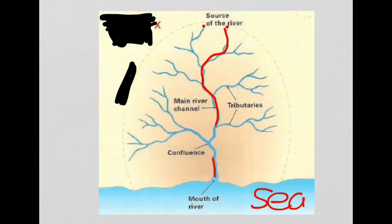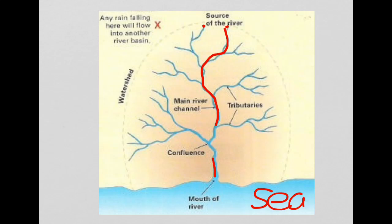And the dashed line running around the outside of the drainage basin represents the watershed. This red X represents the point that any rain or precipitation falling here will flow into another river basin.